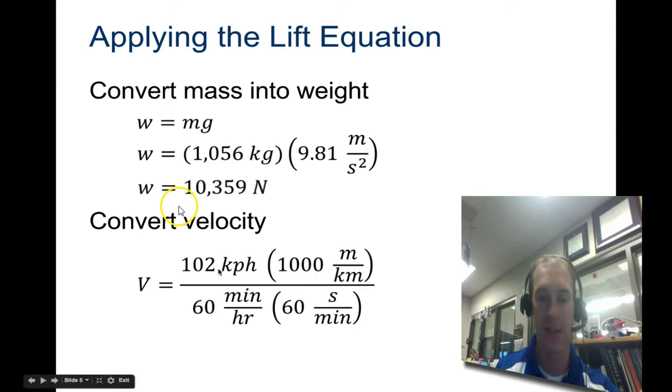Then we convert velocity. If we have 102 kilometers per hour, we need to convert that into meters per second. We first convert kilometers into meters - times 1,000 meters in one kilometer - then convert hours into seconds by dividing by 3,600. You get 28.3 meters per second.